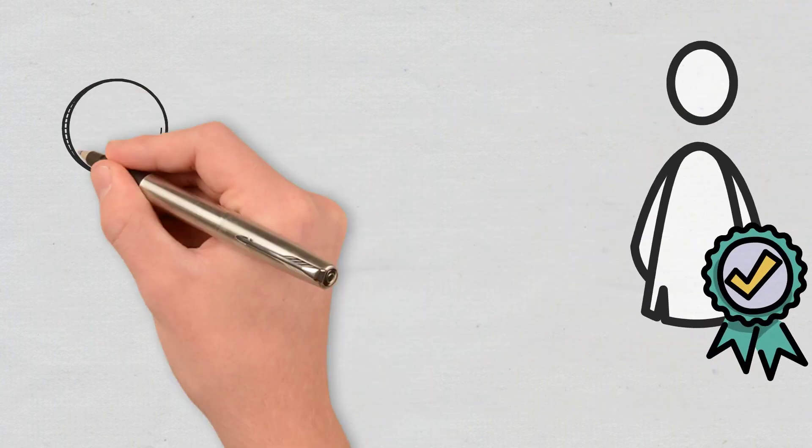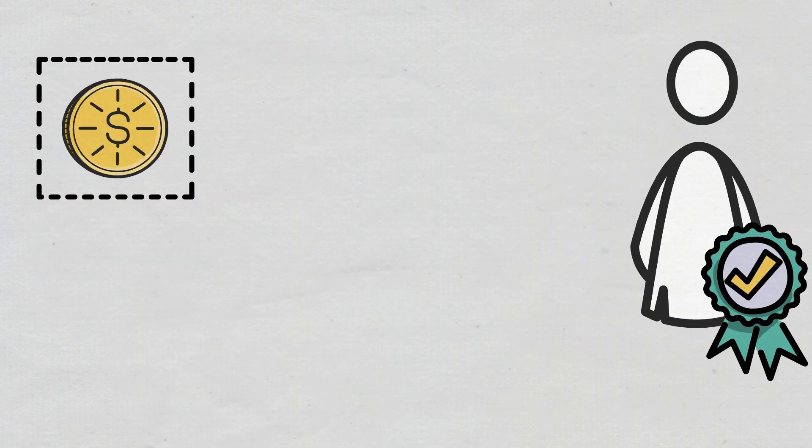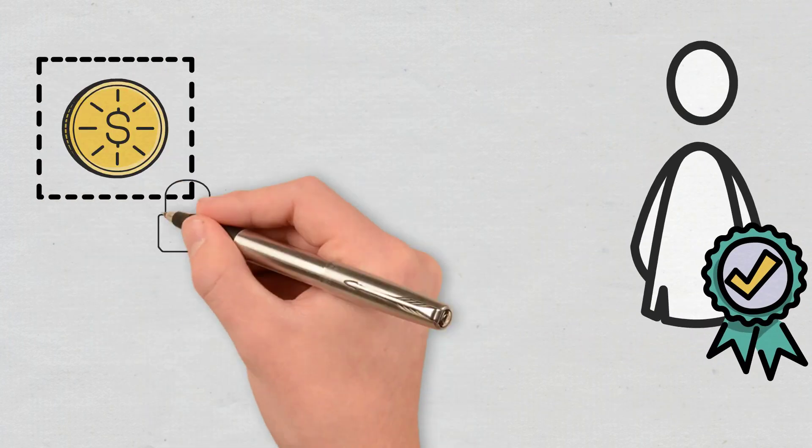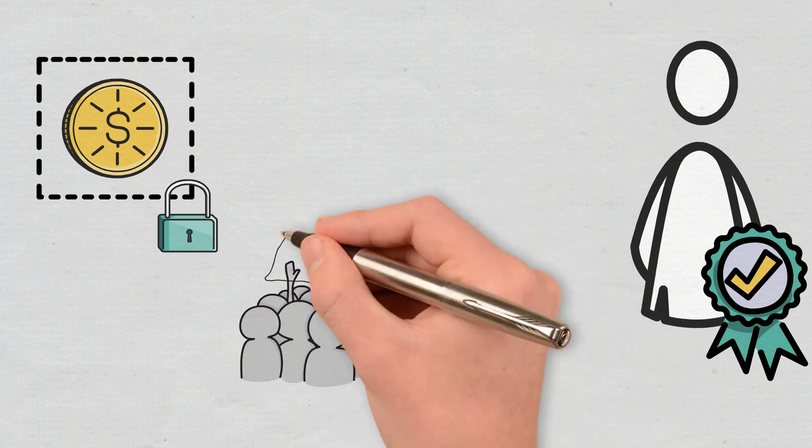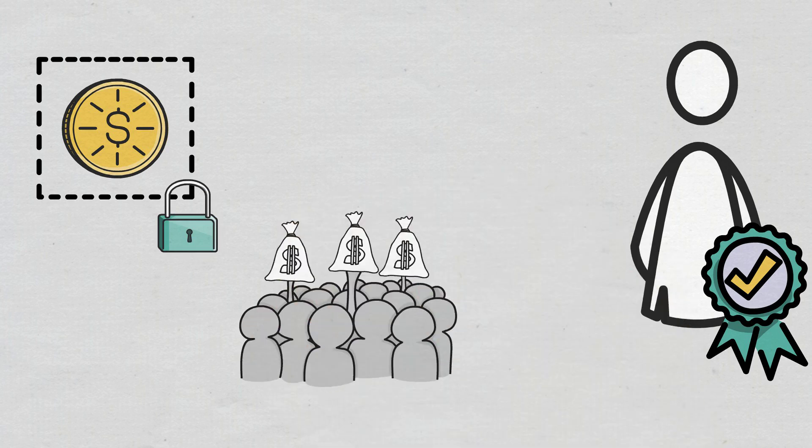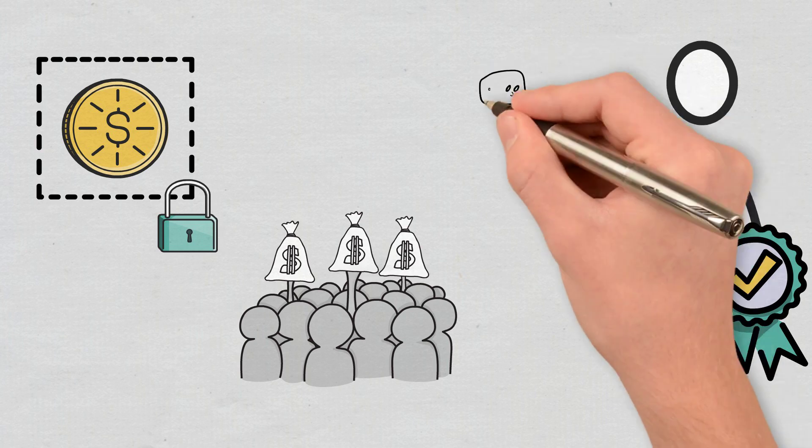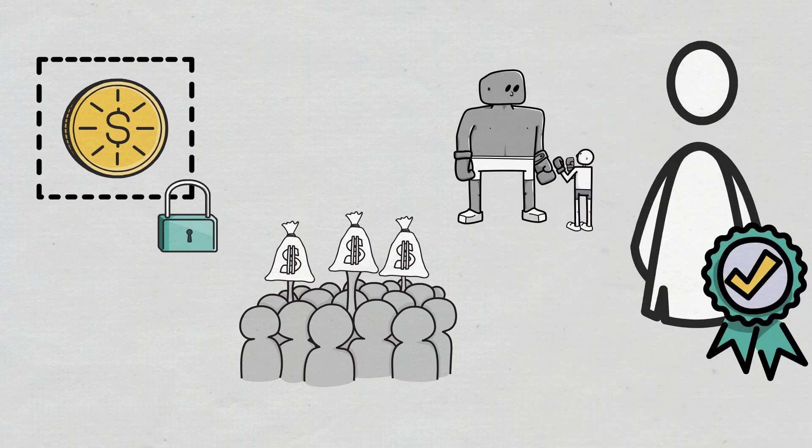The main drawbacks of Proof-of-Stake include the following. Once the coins are staked, they are locked and thus cannot be sold until the stipulated staking period has elapsed. In Proof-of-Stake models that select nodes based on the size of their stake, those who hold a large amount of coins are favored. Since Proof-of-Stake is still relatively new, it is less secure and more susceptible to attacks than Proof-of-Work.